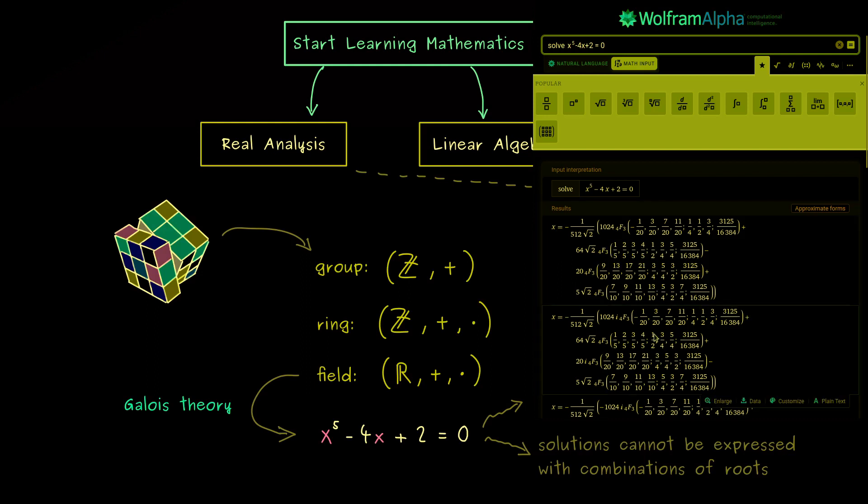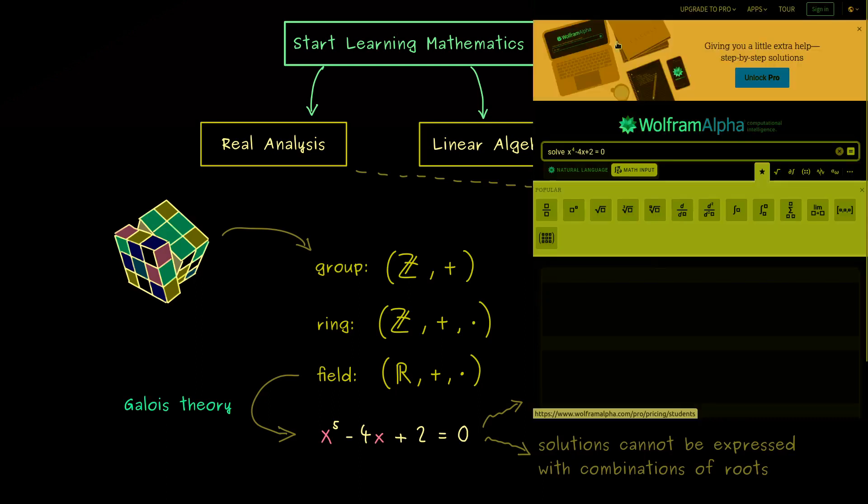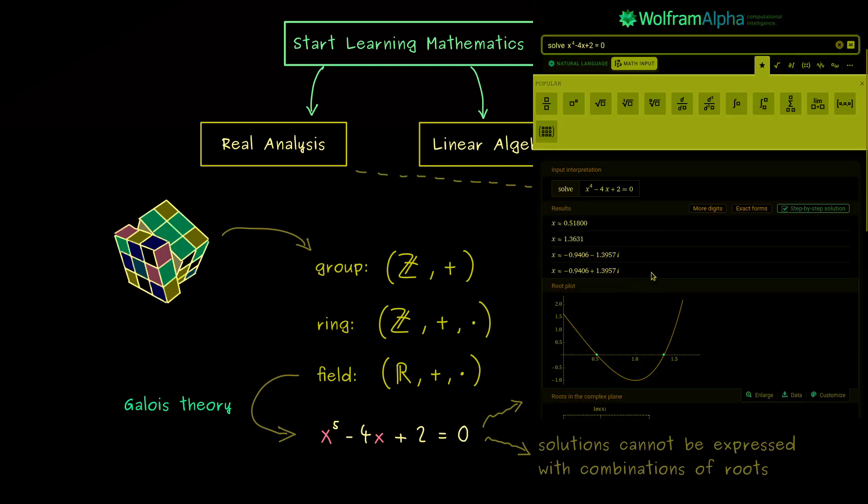And at this point it might be helpful to compare this to an equation with degree 4. So let's change the power to 4 and let's see what we get. Again, we just get approximations, but now let's see what the exact forms are.